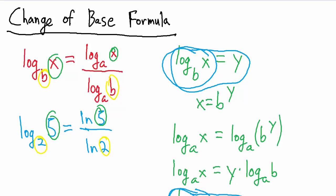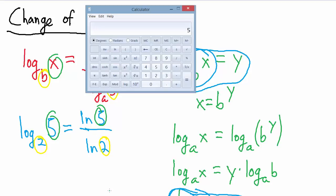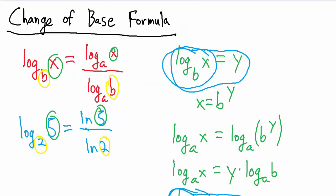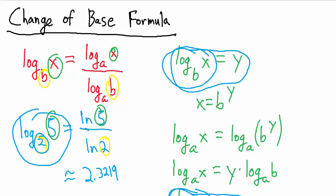Let's pull up a calculator. We want to take the natural log of 5, then divide that by the natural log of 2. Natural log of 5 divided by natural log of 2 approximately equals 2.3219. So the change of base formula is useful because when we have a logarithm with a base that doesn't appear on our calculator, we can convert to a base that is on our calculator and get an approximate value for our expression.